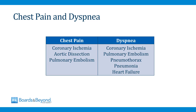For chest pain, the big three diagnoses that you always consider are coronary ischemia — meaning myocardial infarction or unstable angina — aortic dissection, and pulmonary embolism. I talk about all three of those conditions in detail in other videos. For patients presenting with dyspnea, you also have to consider coronary ischemia, because some patients experience dyspnea rather than chest pain with angina. You also have to consider pulmonary embolism, pneumothorax, pneumonia, and heart failure — all very common diagnoses that you don't want to miss.